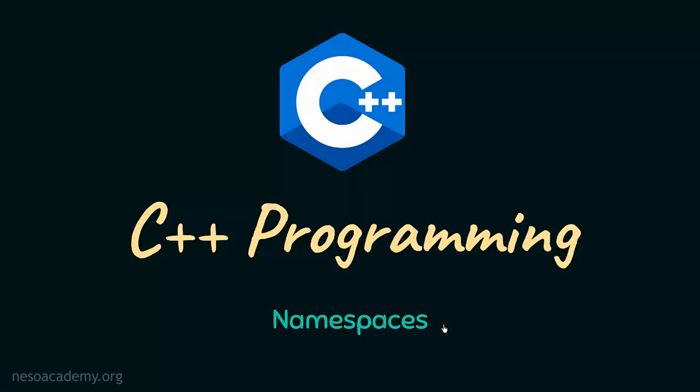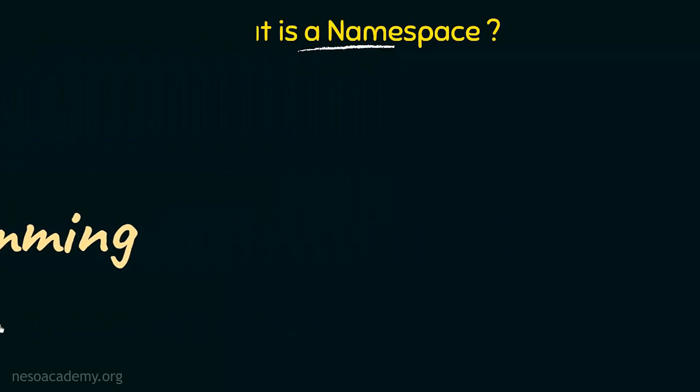In this lecture we are going to study about namespaces. In the previous lecture we saw how input and output are implemented in C++ programming, and we saw the syntax that we use for cin and cout — that is for taking input and for giving output. Keeping that syntax in mind, we are going to study about namespaces and what they are used for.